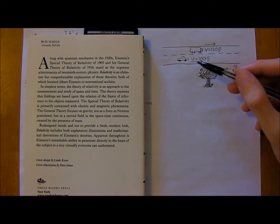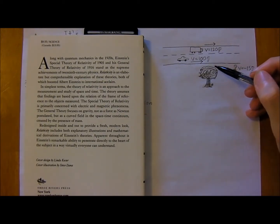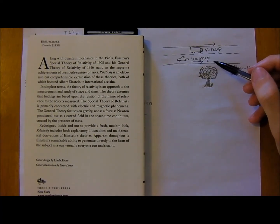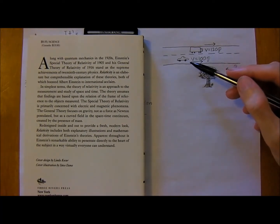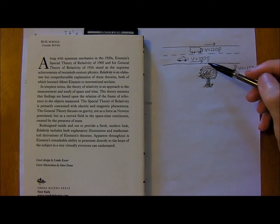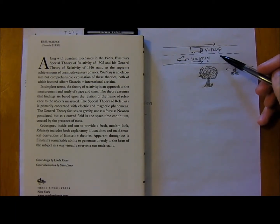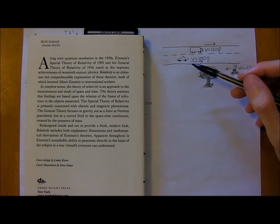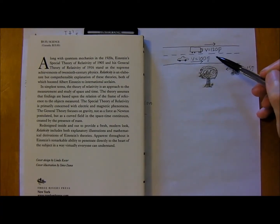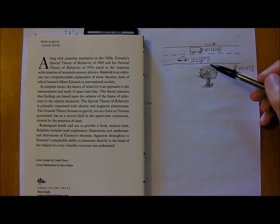Imagine you're in a car on the highway traveling to the right with a velocity of 100 meters per second, and you're sitting there looking out the window and a truck passes you at 120 meters per second. Well, from your perspective, you're stationary in the car and so the truck is actually passing you at 20 meters per second relative to you in that frame of reference.